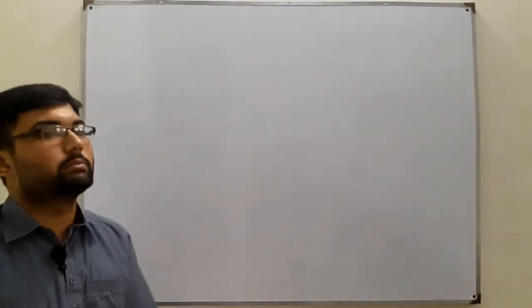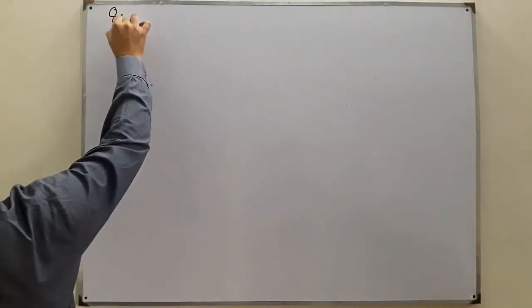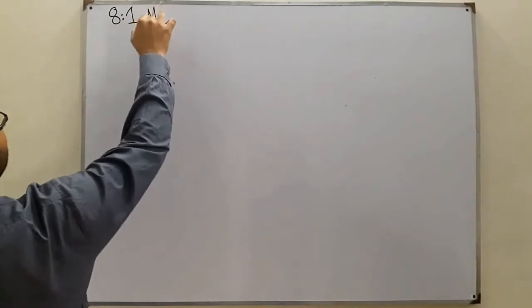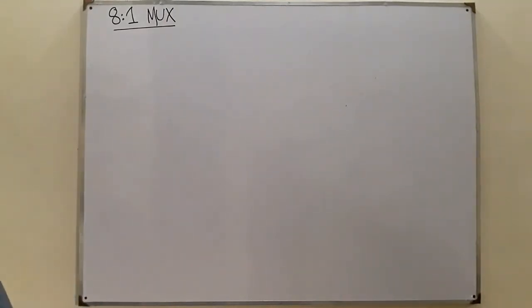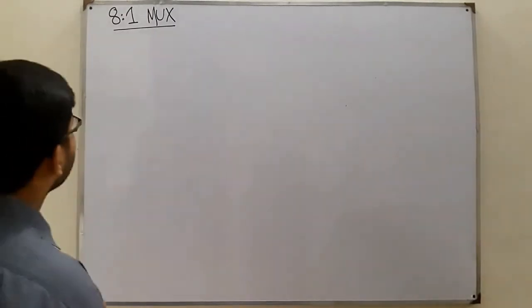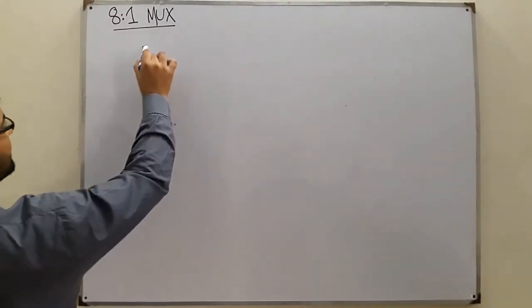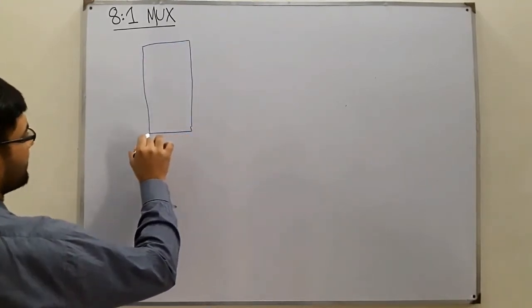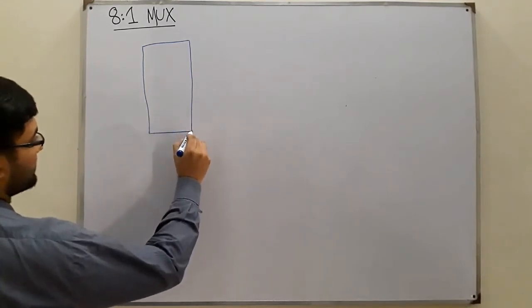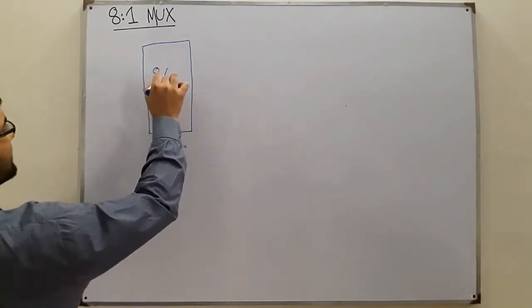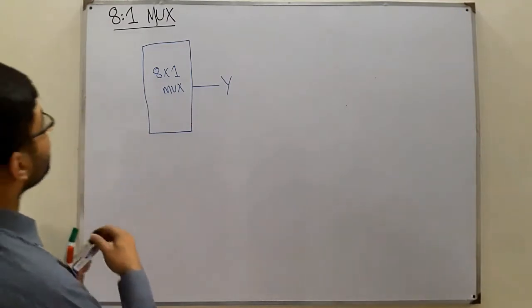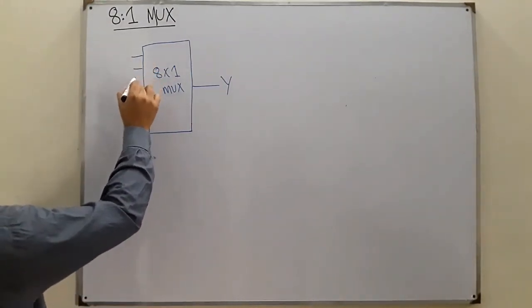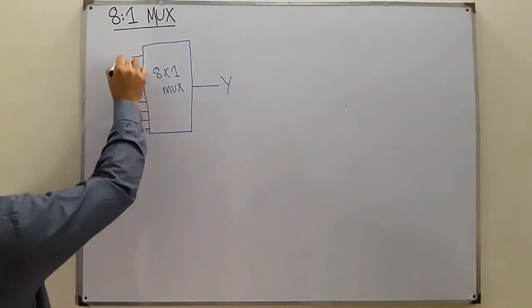Bismillahirrahmanirrahim, Assalamu Alaikum. Salam Khan here, and today we see the eight cross one multiplexer, or the eight cross one MUX in short. From the name we are clear that we have eight inputs. So this is the multiplexer box — this is the eight cross one MUX — and we have only a single output Y.